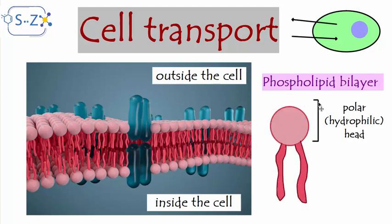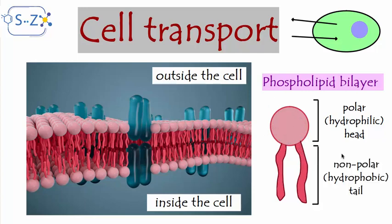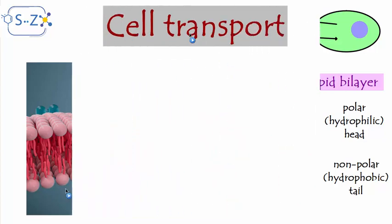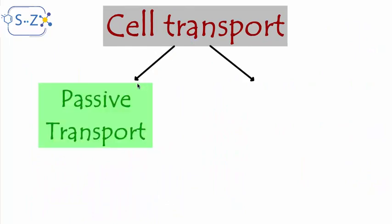This phospholipid is made up of two parts. The first is the polar head, which is hydrophilic — it can tolerate and mix with water. The other part is the non-polar tail, which is hydrophobic — it doesn't like to mix with water and mixes more with fatty molecules like cholesterol. The plasma membrane also has proteins, cholesterol, and carbohydrates inside it, and each of these has its own function.